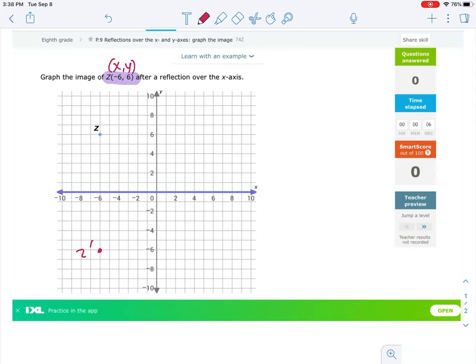So Z prime is located right here at negative 6, negative 6.